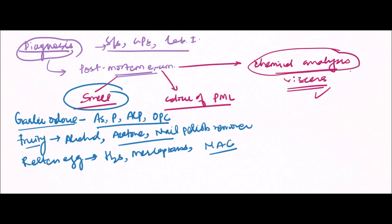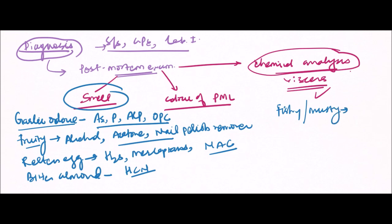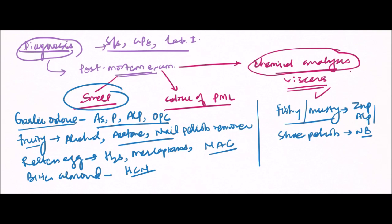The bitter almond-like smell comes from hydrocyanic acid, or simply cyanide. The smell of decaying fish or musty odor comes from zinc phosphide and aluminum phosphide. A shoe polish-like smell comes from nitrobenzene compounds, and a disinfectant-like smell comes from phenol and cresol.